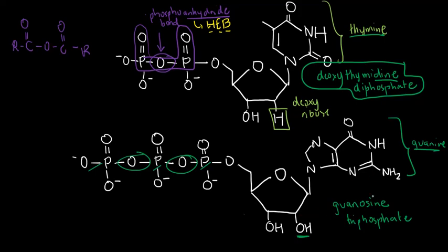Also, in textbooks, especially in metabolism, you will find these nucleotides abbreviated. For example, deoxythymidine diphosphate would be written as dTDP, and guanosine triphosphate would be written as GTP.